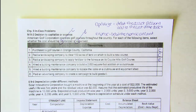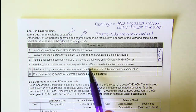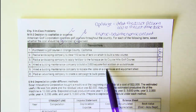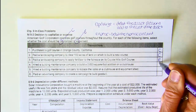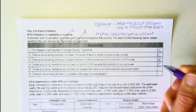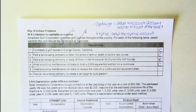Number four: hired a building maintenance company to build a 2,000 square foot addition. This is to be capitalized and added to the cost of the asset because it is improving its usefulness through enhanced capacity. So we debit the asset account and capitalize it.